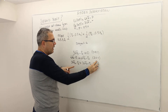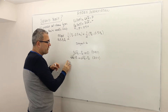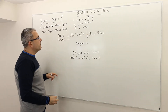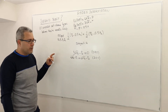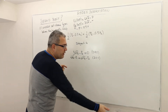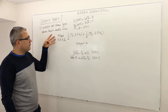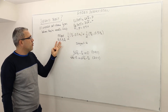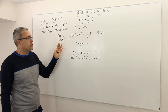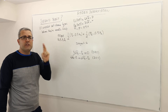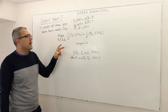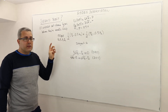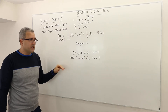That means in this maximization problem, you can ignore the individual rationality constraint of type 1 because it's not going to be binding, and you can also ignore the incentive compatibility constraint of type 2. So the optimization problem reduces to maximizing the objective by choosing x1, p1, x2, p2, subject to only two constraints, and this time those constraints hold with equality.